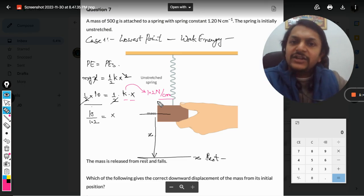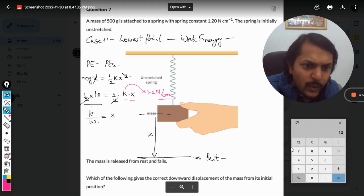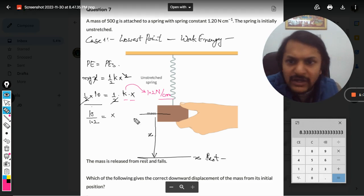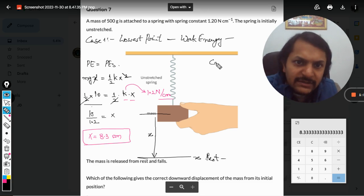So our answer is 10 divided by 1.2, which comes out to be 8.3. So 8.3 centimeters is the answer for case number one. And what about case number two now?